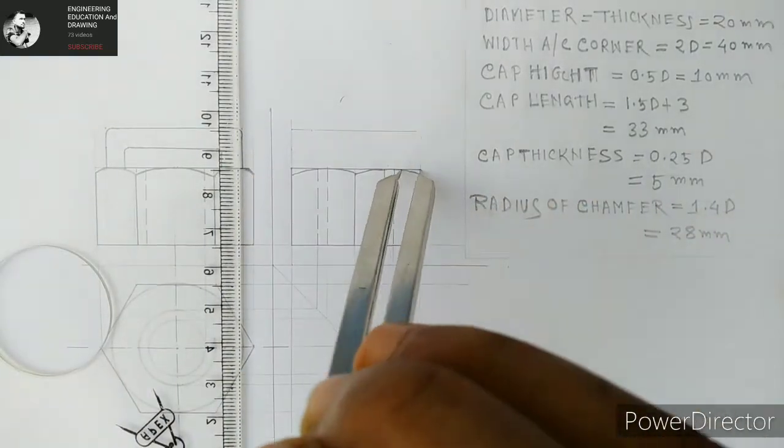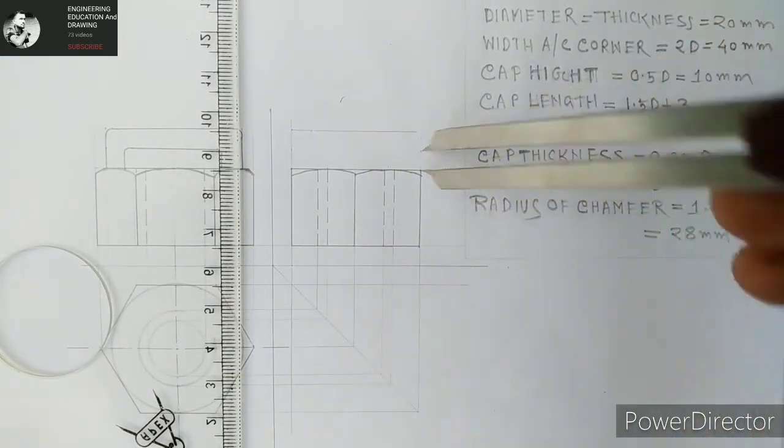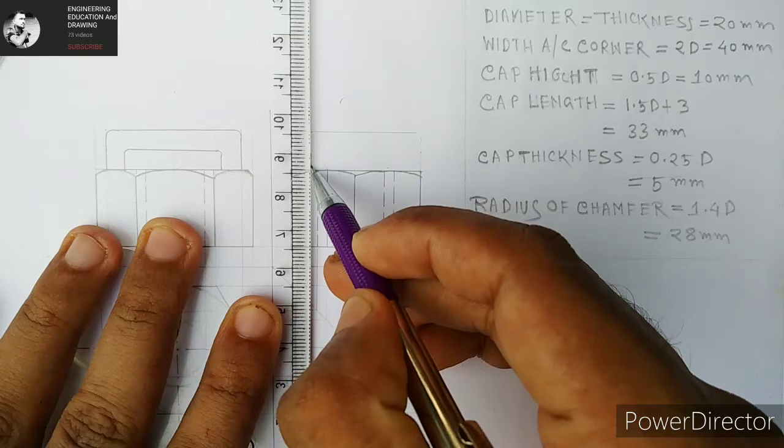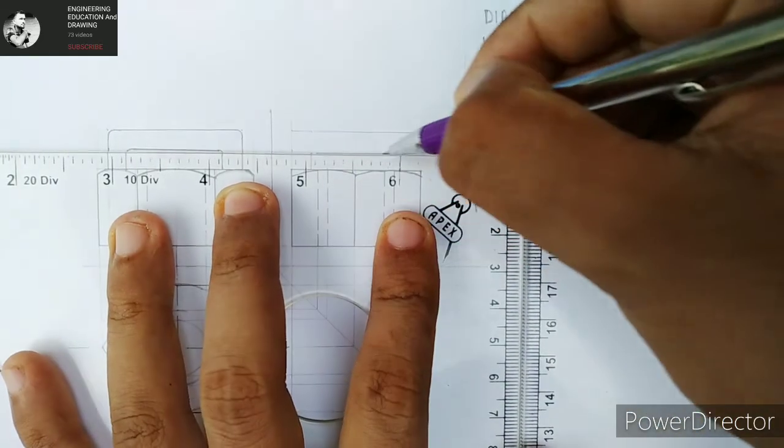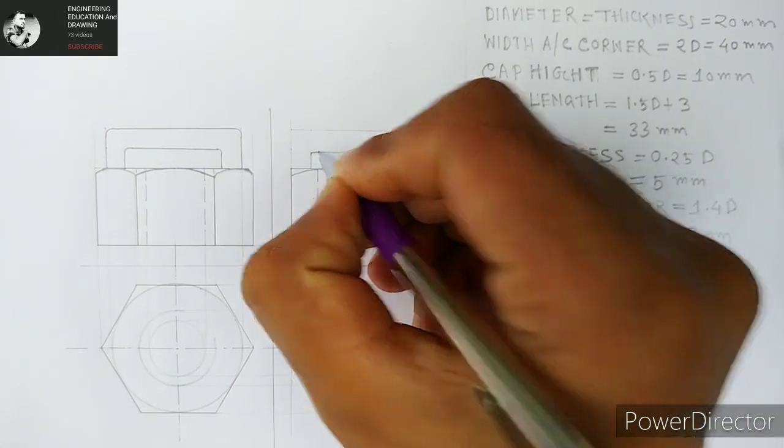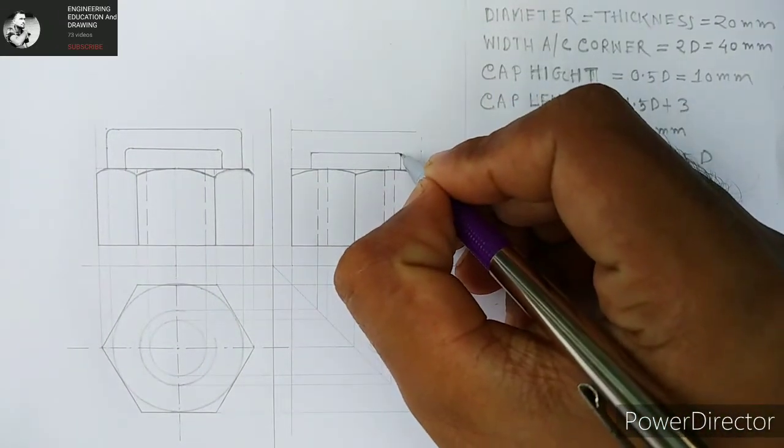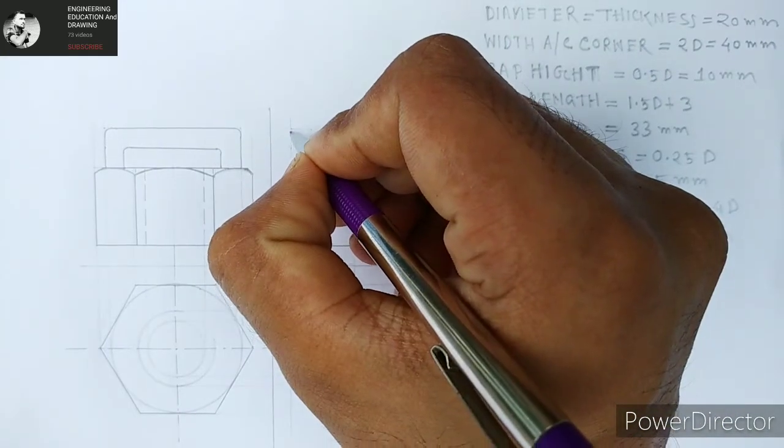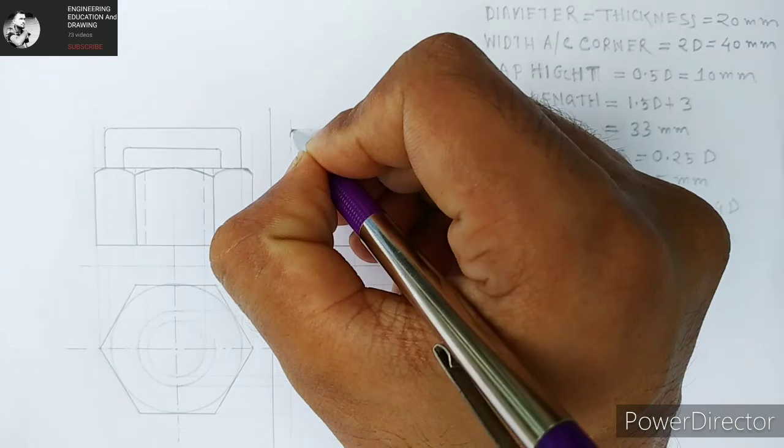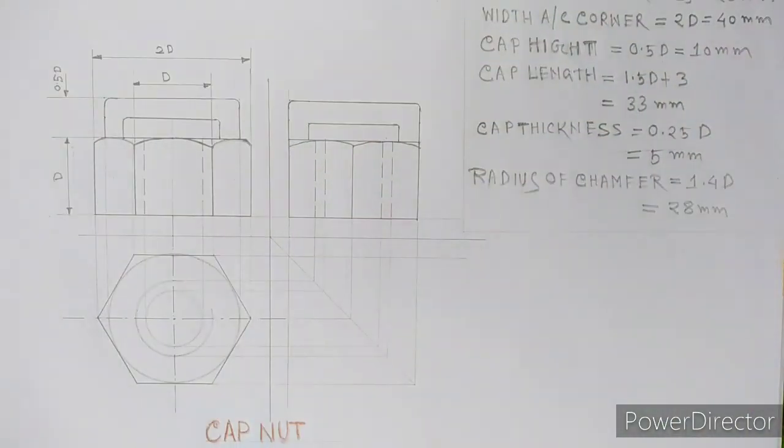We are making the same method: 5 millimeters thickness and length. We are making this the same method we made in the front view. So we are making these curves by freehand. Now we are almost completed and this is the cap nut.